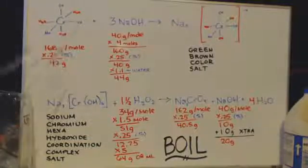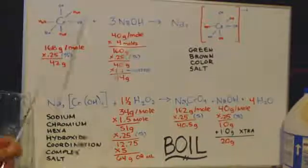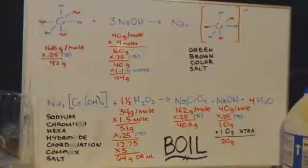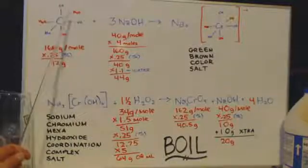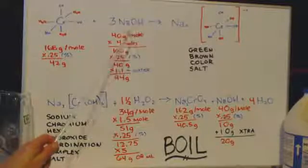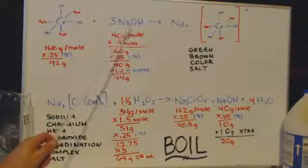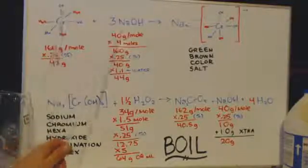What happens here is this insoluble chromium hydroxide has these ligands, as we know, and that makes it acidic. Because we know water can be acidic or it can be basic, but when you put it in with this sodium hydroxide, this is really basic.